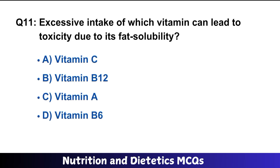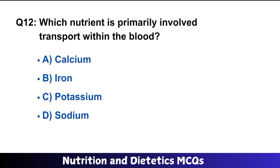Question number eleven: excessive intake of which vitamin can lead to toxicity due to its fat solubility? C is the right option: vitamin A. Question number twelve: which nutrient is primarily involved in oxygen transport within the blood? B is the right option: iron.